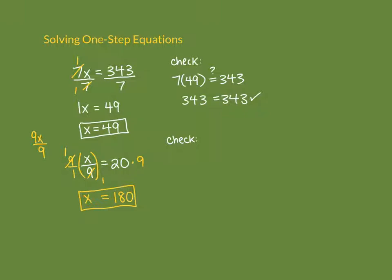To check, substitute the answer for the variable. Since the equation says x divided by 9, we do 180 divided by 9 and check whether that really equals 20. Use your calculator to be sure. 180 divided by 9 does give 20, so 20 equals 20 — put a check mark. The answer is correct.